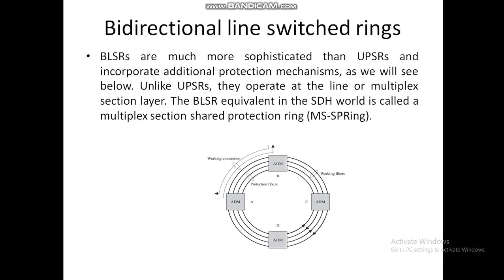For example, on the working fiber, traffic from node A to node B is carried clockwise along the ring, as shown in the diagram. Traffic from node B to node A is carried counterclockwise along the ring. Traffic belonging to both directions of the connection is routed on the shortest path between the two nodes in the ring — whichever is the shortest path, it will take that path.